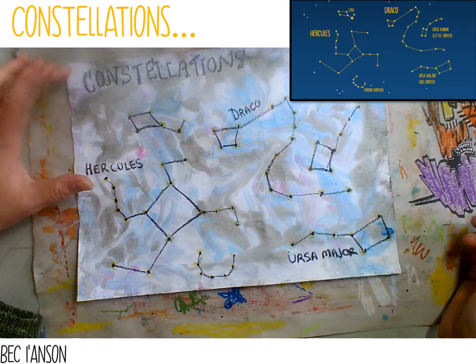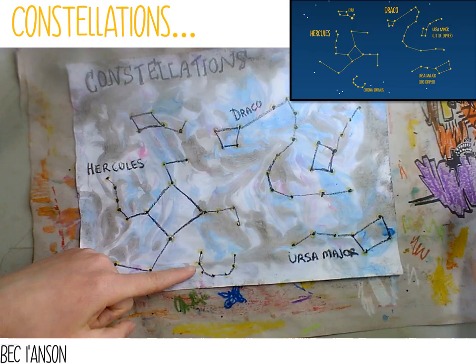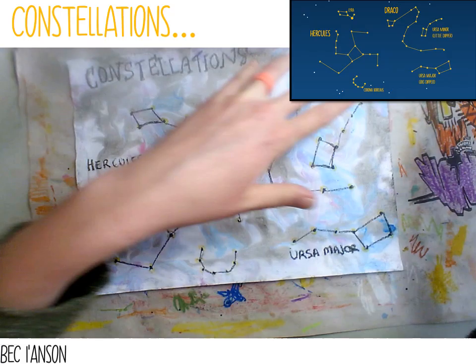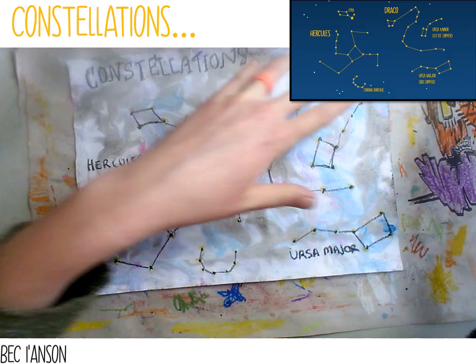So we have our constellations: Hercules, Draco, Ursa Major, the Little Dipper, the Corona Borealis, or the Northern Crown. Well done, guys! I'm really excited about our really cool constellations map — it's great, I'm really impressed. That looks awesome. Until next time, guys. Bye!